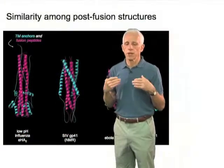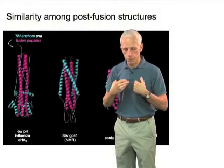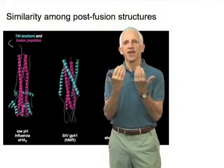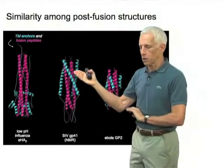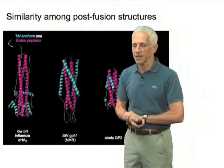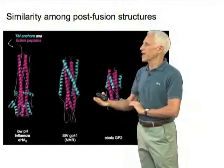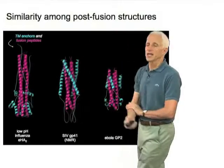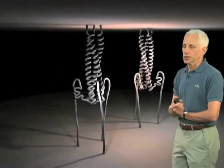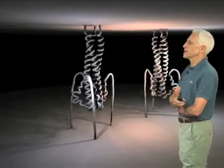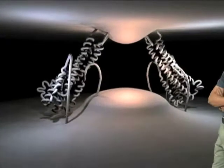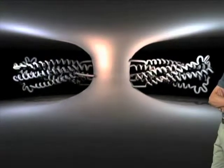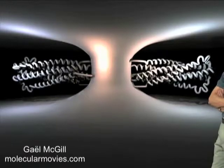The postfusion conformation of the flu hemagglutinin HA2 corresponds to a trimer of hairpin-like structures, and it turns out that for large numbers of these so-called class 1 viral fusion proteins, that simple analogy is true. Indeed, in the case of HIV and SIV, the hairpin is particularly simple — just a helix coming down, a loop turning around, and a helix coming up. The membrane fusion process is nicely represented in this animation, based on the structure of the postfusion state of the HIV and SIV conformational proteins, going from the extended intermediate at the beginning to a fused state at the end.